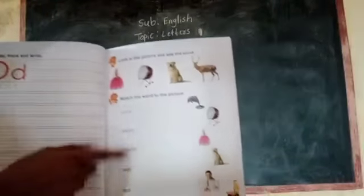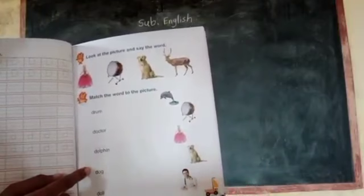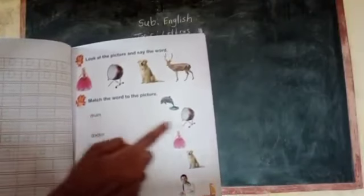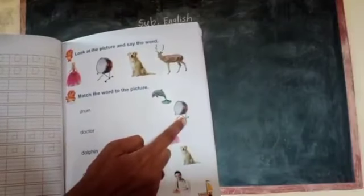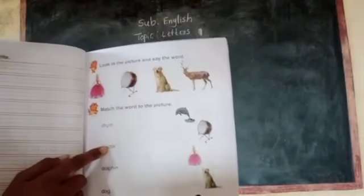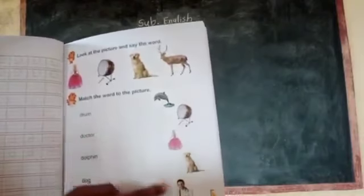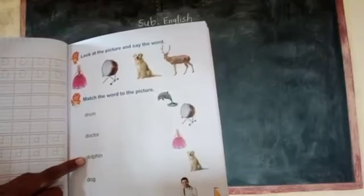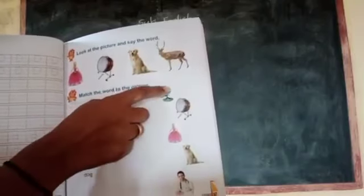After you write the spelling, you are able to match the following. What is this? D-R-U-M. Drum. Where is drum? Here. Drum is here. Match it. Doctor. D-O-C-T-O-R. Where is doctor? Here. Match it. Next, dolphin. This is a dolphin. You match it.